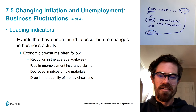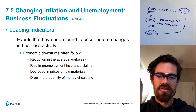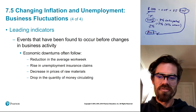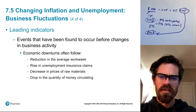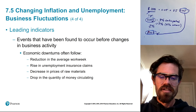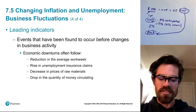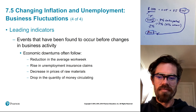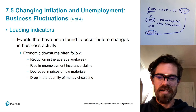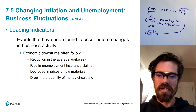Another leading economic indicator is the prices of raw materials — a decrease in raw material prices generally signals we're heading toward a contraction. Also, a drop in the quantity of money circulating is a leading indicator. Other examples include the yield curve and the leading economic indicator index, which combines all these different indicators into one composite index.